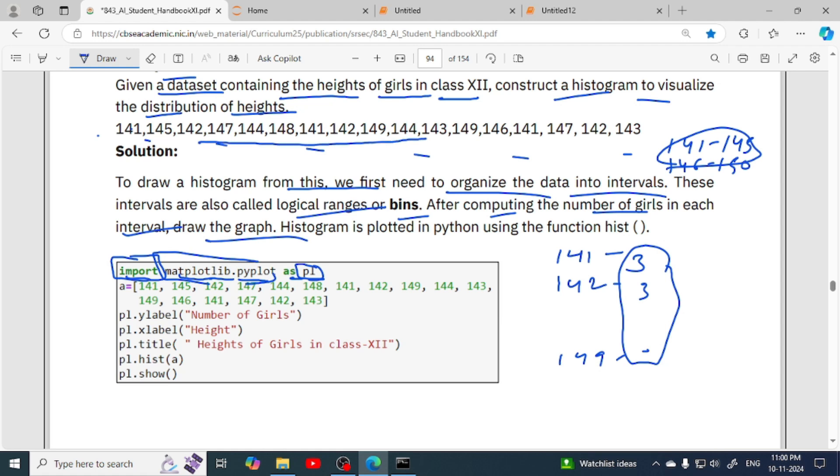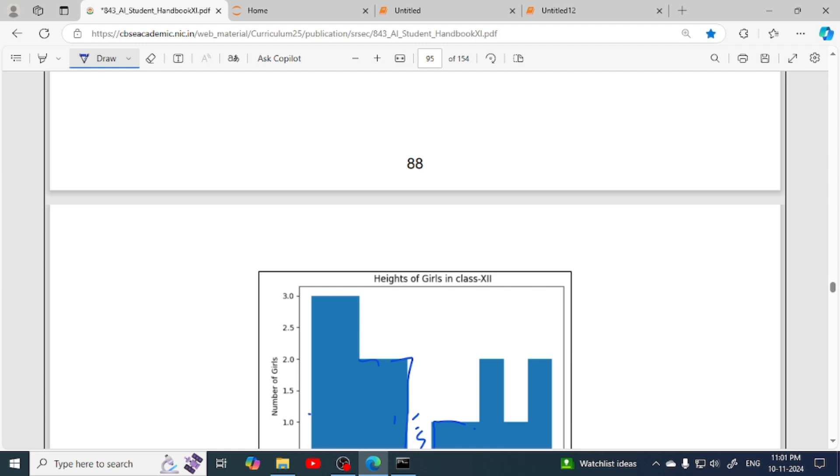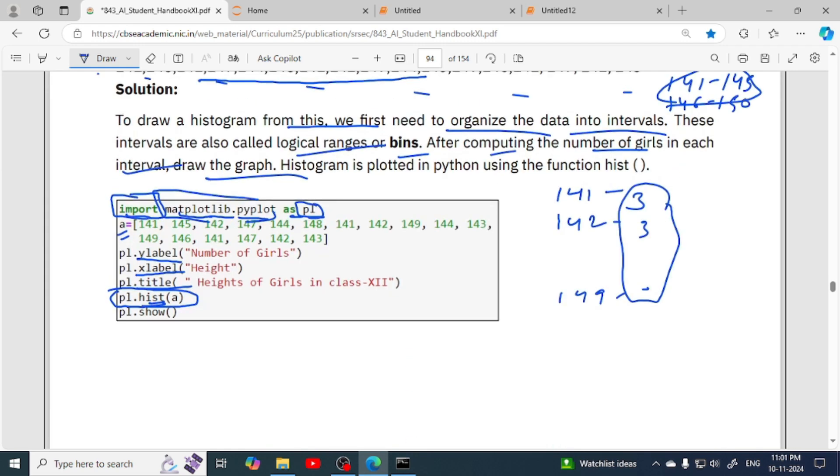As we have to draw the histogram for this data, first we will store the heights of girls in the form of a list. Now, y label, x label, and title are optional. The main line is this: as we have to plot histogram, we use the hist function. We have to draw histogram for the height of girls, so we pass this variable here. If we want to set the color for these bars, we can write color equals to the color code.